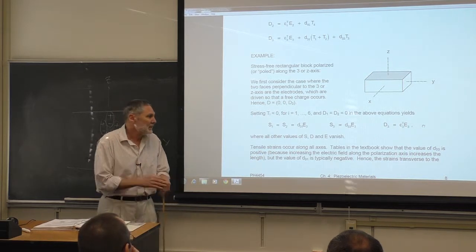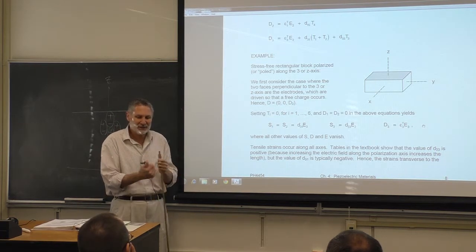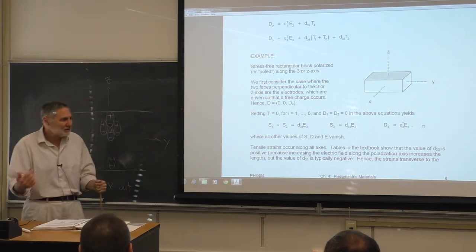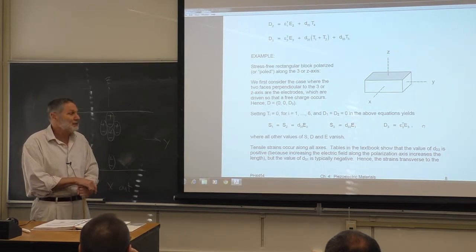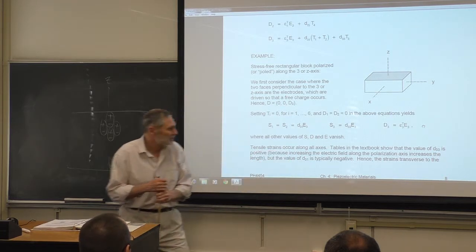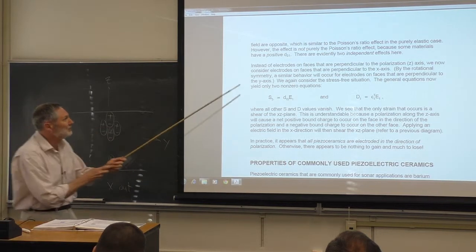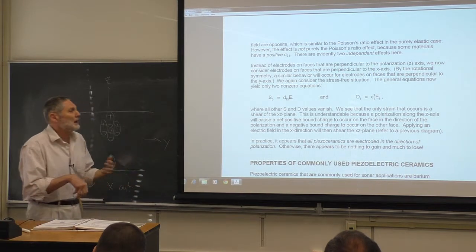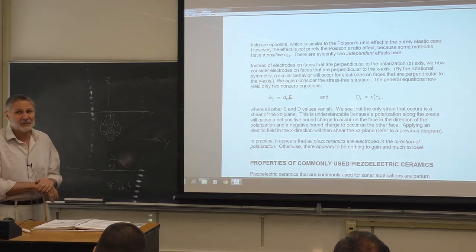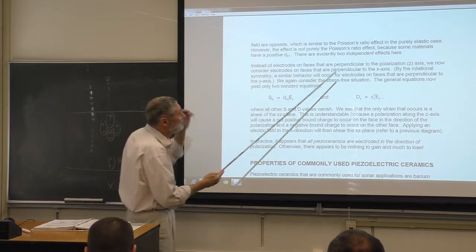D₃₁ is only typically negative — it can go the other way. That sort of put the nail in the coffin; that's when I realized these are two independent effects. A lot of people tend to refer to the electric effect as a Poisson-type effect, but you need to be aware that it can go both ways — it's independent and it happens to be able to go both ways.